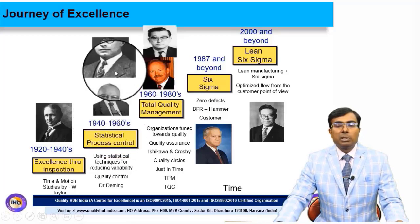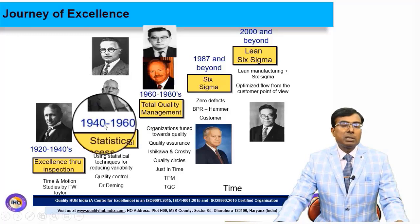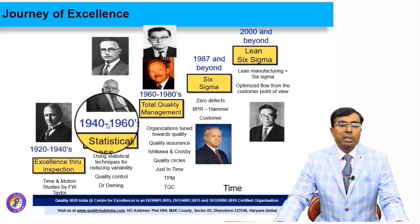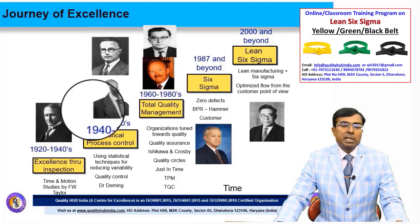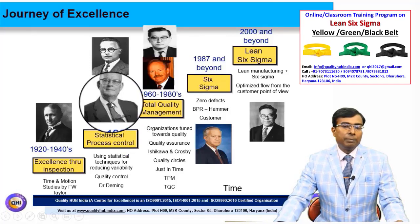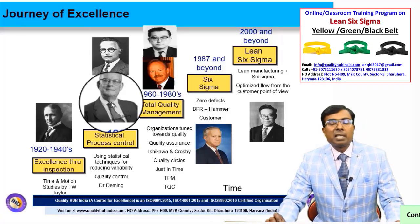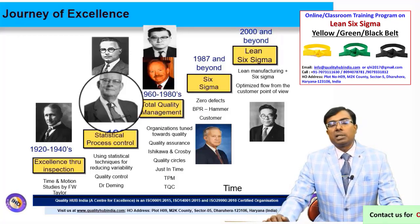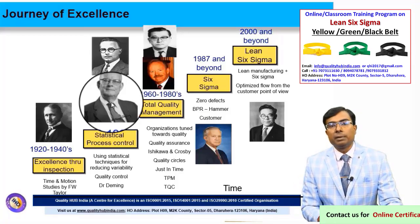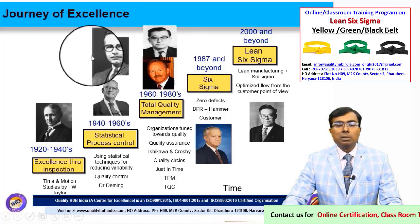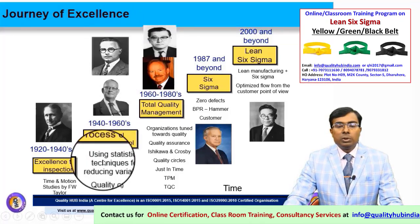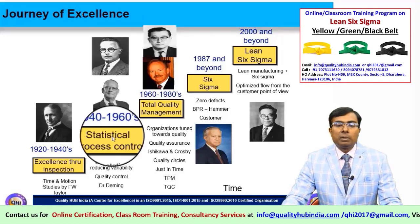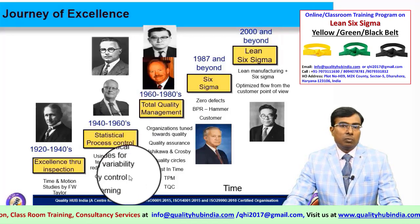The next phase, between 1940 and 1960s, focused heavily on statistical process control. Prominent figures include Dr. Edward Deming, who contributed greatly to quality philosophy and played a major role in Japanese quality management post-World War II. His colleague Joseph Juran also visited Japan frequently, teaching quality control and SPC to industry management. Walter Shewhart was a key figure in statistical process control who developed the concept of control charts.